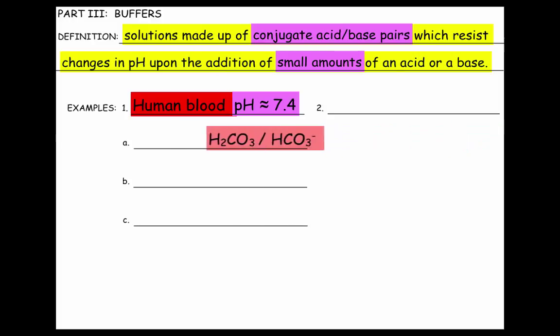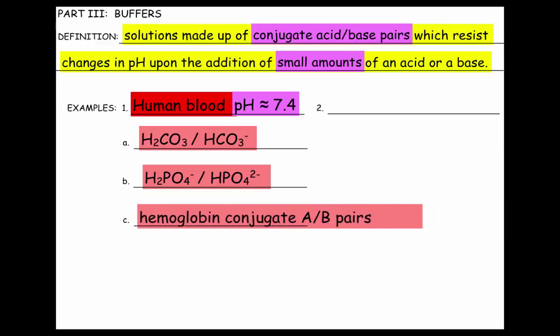So I'll just list the three. It's the carbonate conjugate acid-base pair, the phosphate conjugate acid-base pair, and there are many hemoglobin conjugate acid-base pairs. Another buffer system is seawater.